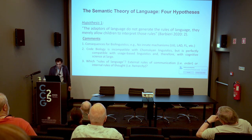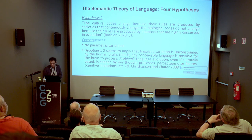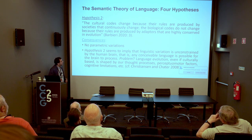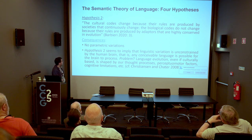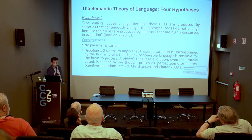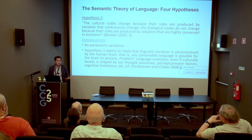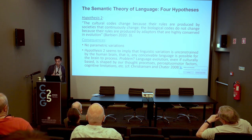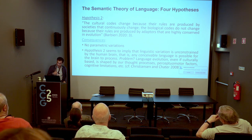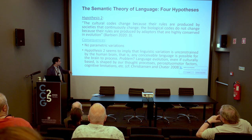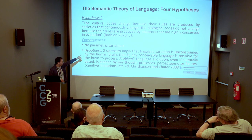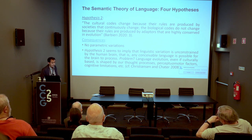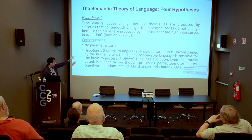Hypothesis two: the cultural codes change because their rules are produced by societies that continuously change; the biological codes do not change because their rules are produced by adapters that are highly conserved in evolution. The consequence for biolinguistics: no parametric variation — at least not as conceived in Chomskyan linguistics, where the concept of parameters has been central since the 1980s. If the rules are actually changing because societies are changing, this has nothing to do with parametric variation as Chomsky conceived it.